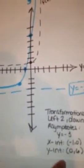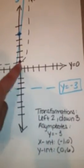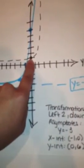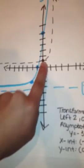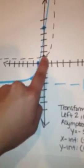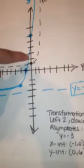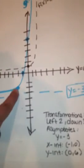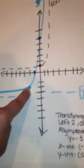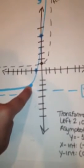To get the left 2, down 3 transformation, from the starting point (0, 1), you go left 2: 1, 2, and then down 3: 1, 2, 3. That leaves you at (-2, -2).